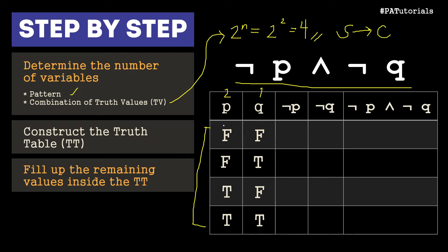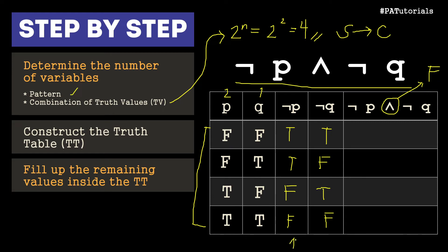First, not P: we negate P, so false becomes true, false becomes true, true becomes false, true becomes false. For not Q: false becomes true, true becomes false, false becomes true, true becomes false. Now for not P and not Q using AND — shortcut: if there's a false, it's automatically false. True and true is true; true and false is false; false and true is false; false and false is false.